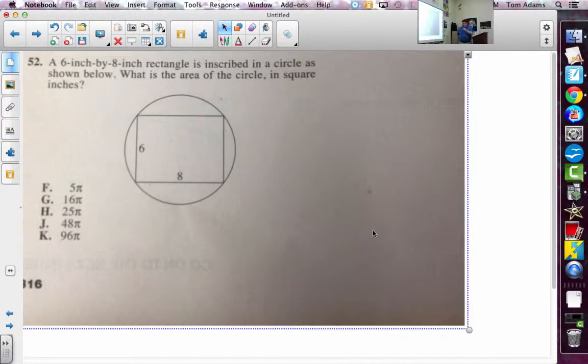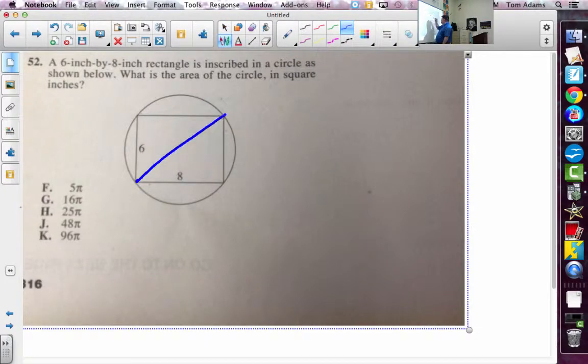Alright, so here's what we have to do here. Notice that the diagonal of the rectangle is actually the diameter of the circle. Well, if this is 6, then this is 6.